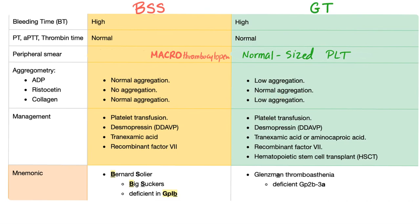So the aggregometry results are like scissors — the opposite of each other. How about collagen? Collagen has a similar effect to ADP on either syndrome. If ADP is normal for Bernard-Soulier, collagen will also be normal. If ADP is low for Glanzmann's, collagen will also be low.